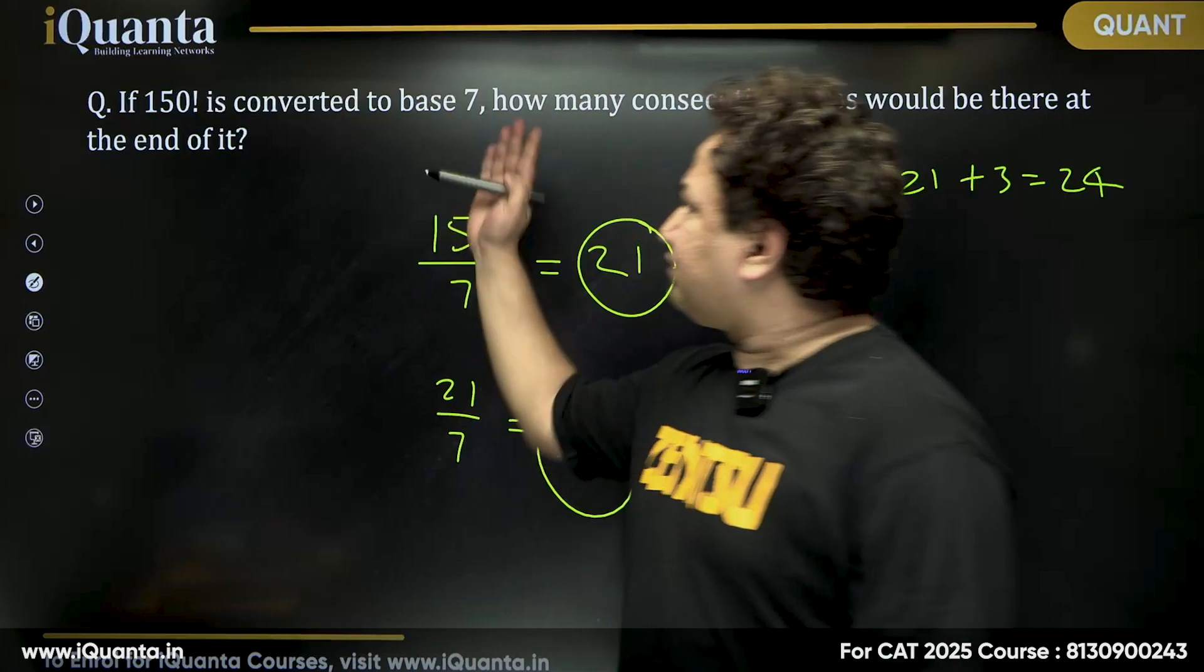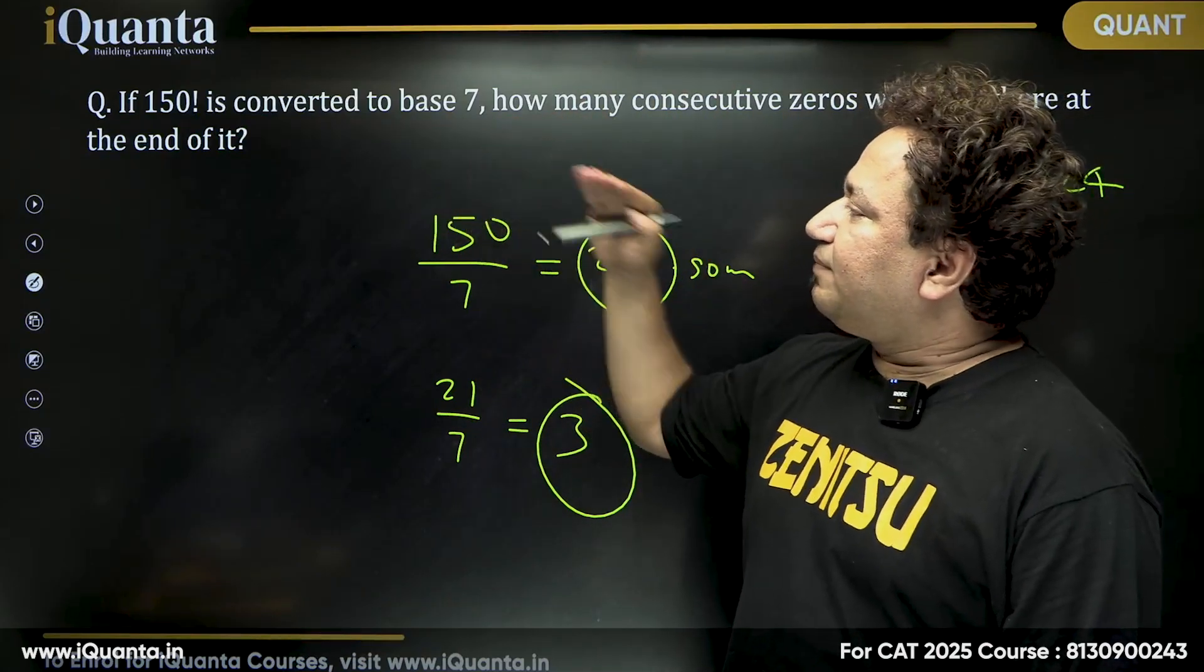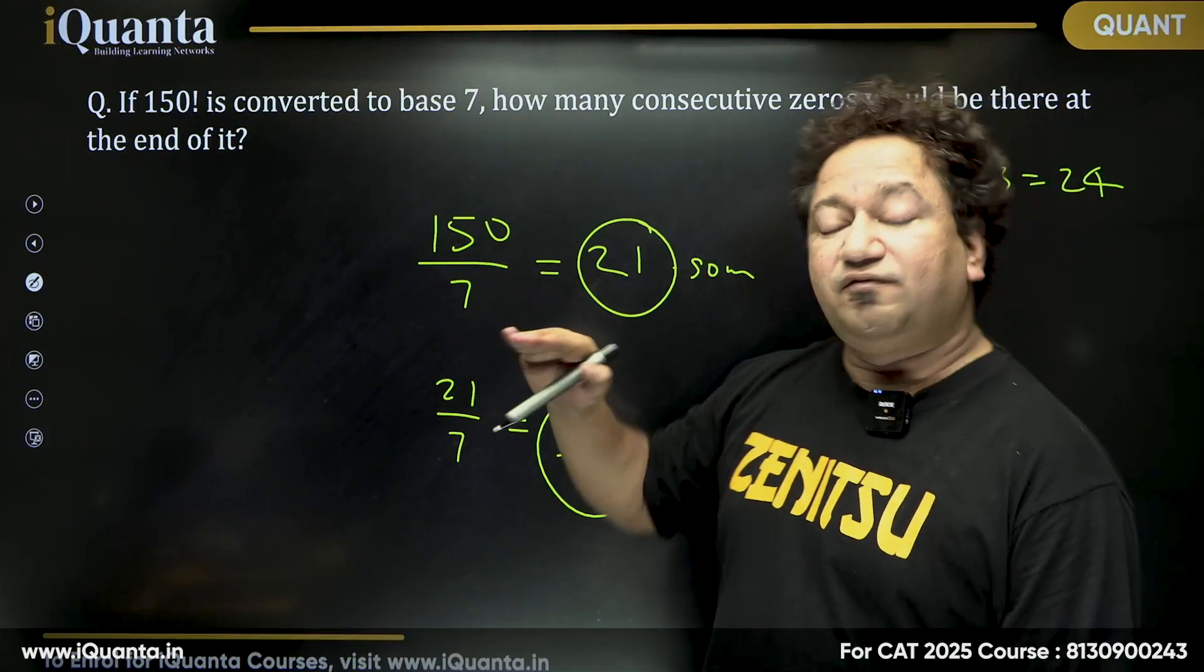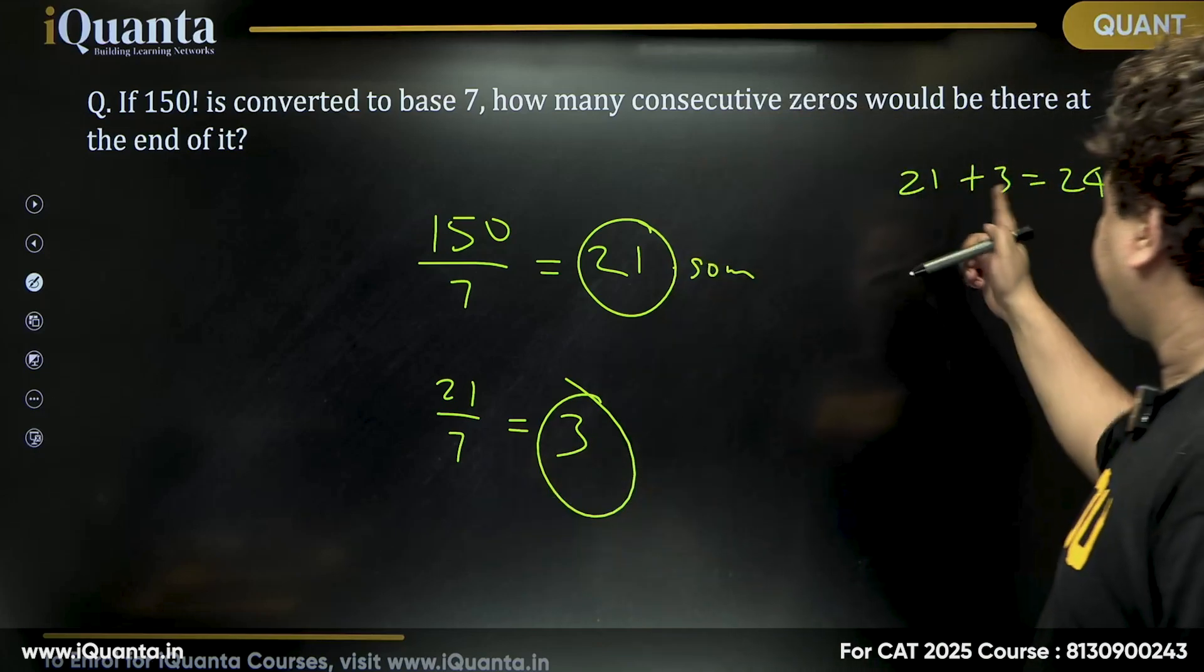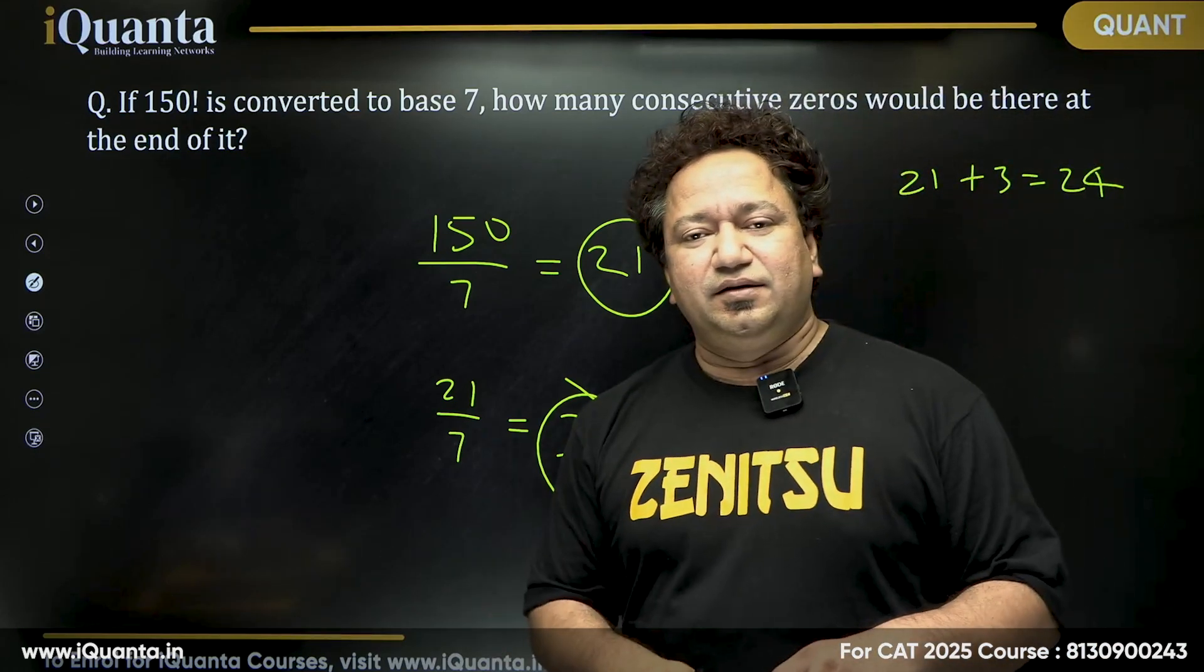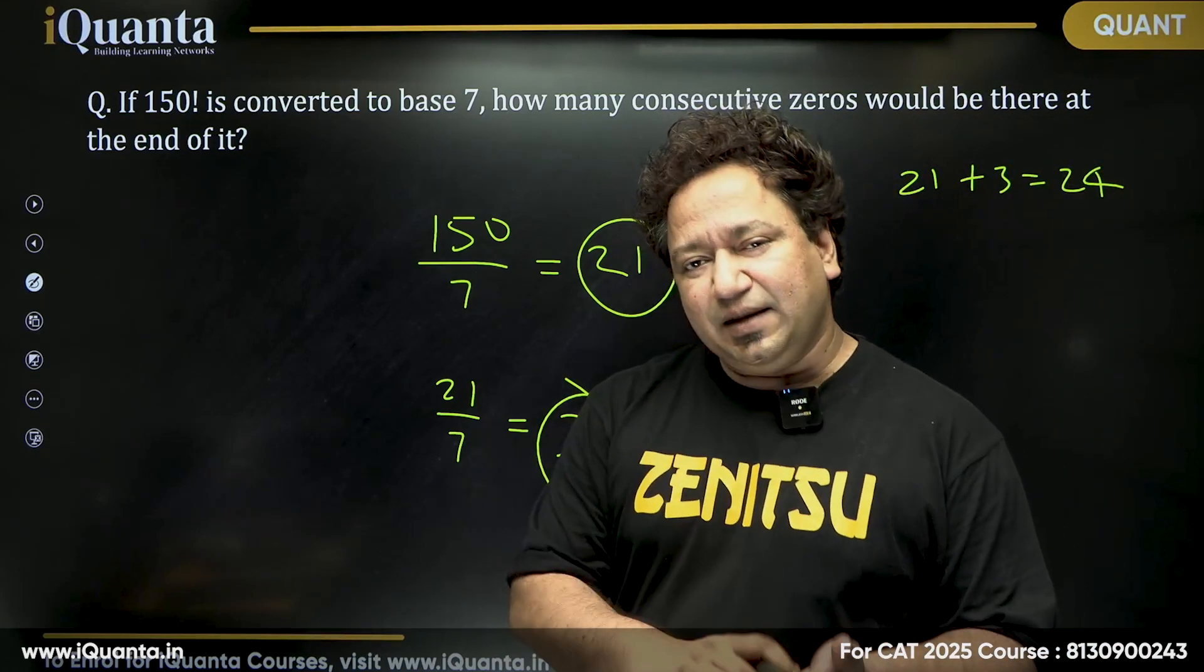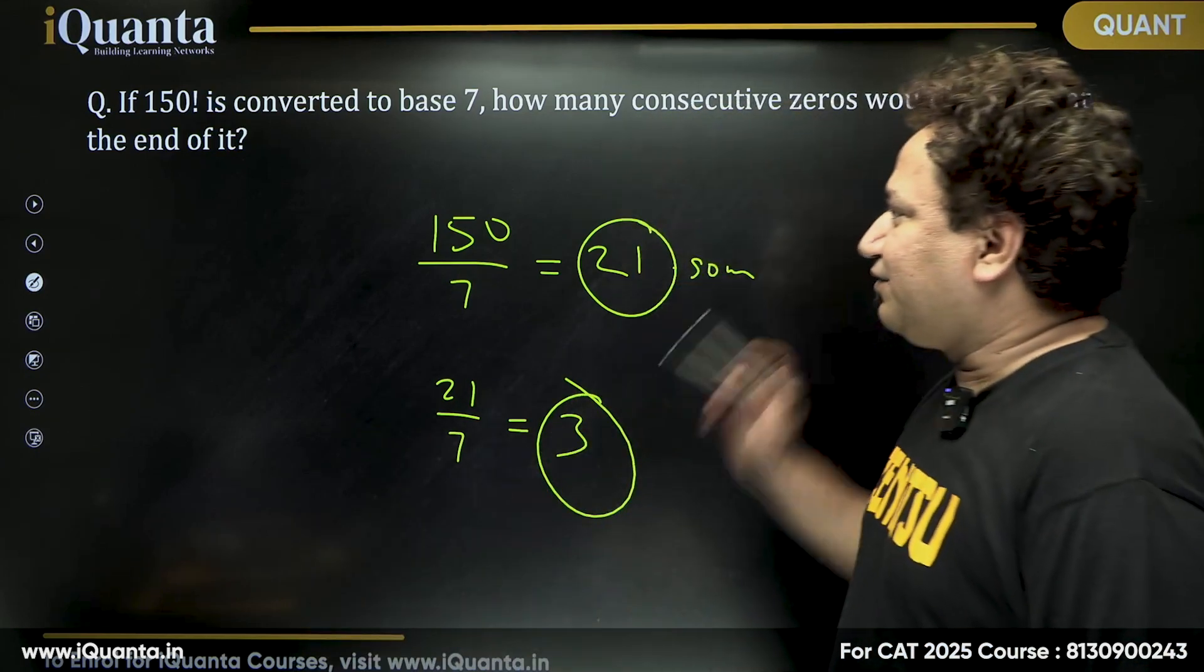So basically, if this question was in base 10, the maximum power that can divide factorial 150 is 24. And in base 7, the number of trailing zeros would be same as the number of 7s, that is 24 here. Thank you.